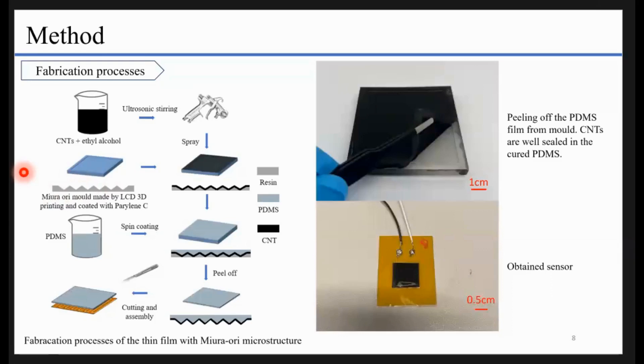After that, we evaporate all the lithium alcohol and only keep the CNT network on the surface. Then we spin coat a layer of PDMS and cure it to hold the whole network. We can see that no CNT particles remain on the mold, which means all the CNT network is locked into the PDMS. After that, we cut and assemble it with the electrode.